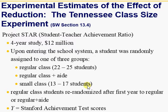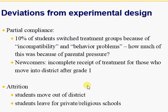Each year there was a Stanford Achievement Test score. We will also carry out this analysis in Stata in our next videos. There was 10% of students who switched — partial compliance — but these students switched due to behavior problems or other adjustment problems, and it means they were random, so it will not make much difference in your results.